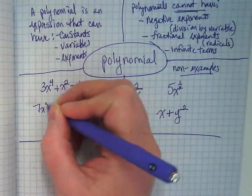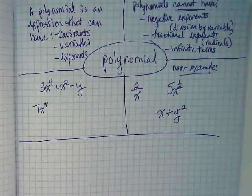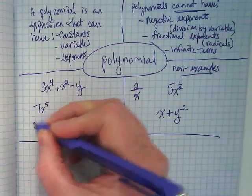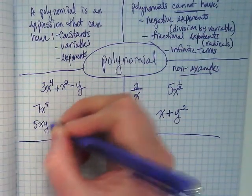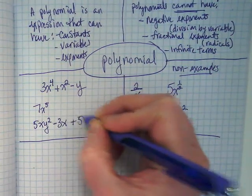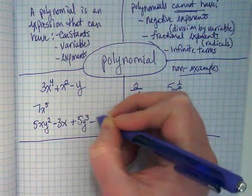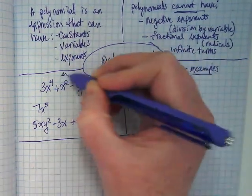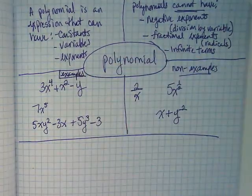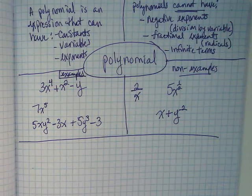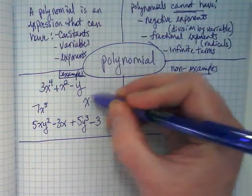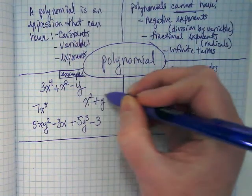7x to the fifth power, that's a polynomial. 5xy squared minus 3x plus 5y to the third minus 3. These are all examples that are polynomials. x squared plus y squared is a polynomial.